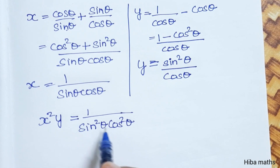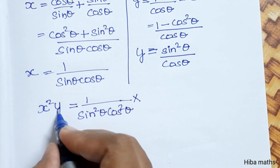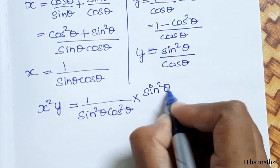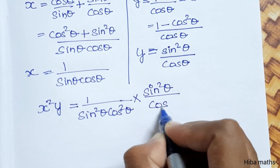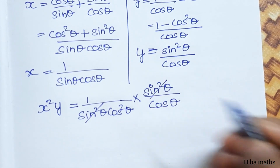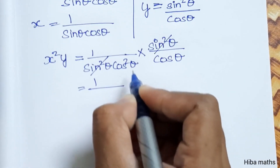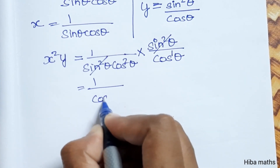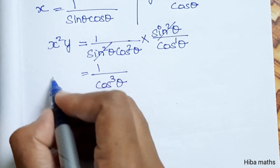y equals sec θ minus cos θ, which equals 1/cos θ minus cos θ. This gives (1 minus cos²θ) / cos θ. Since 1 minus cos²θ equals sin²θ, y equals sin²θ / cos θ.